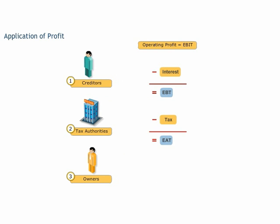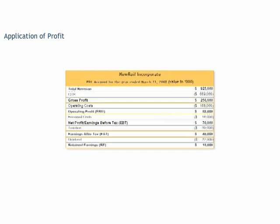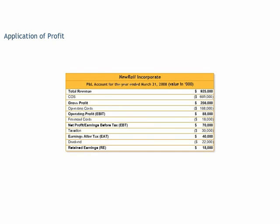After paying tax, dividend is payable to the shareholders or the owners of the organization. The balance amount is the retained earnings of your organization. Here is NewRail's profit and loss account with all these values.